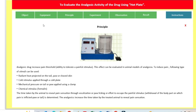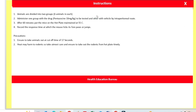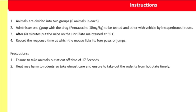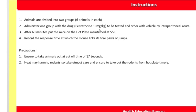Now we will see how to conduct this experiment. We will click on experiment. Instructions: animals are divided into two groups, six animals in each. Administer one group with the drug pentazocin — a narcotic drug, a kappa agonist — to be tested. The other group receives vehicle by intraperitoneal route. One group receives the vehicle and the second group is treated with pentazocin.